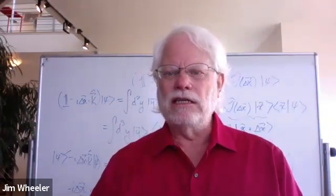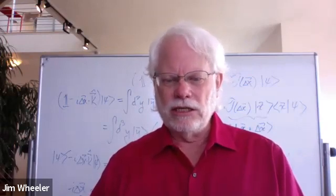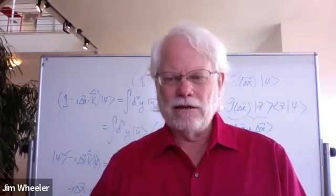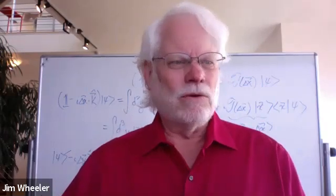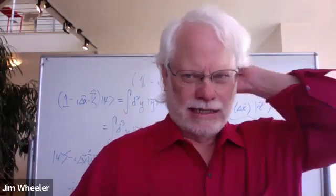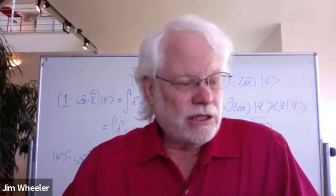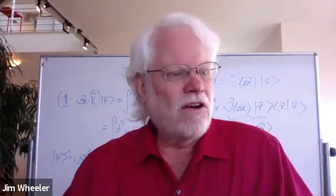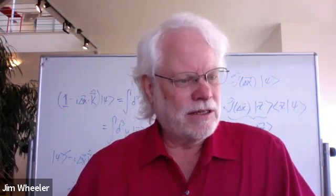Have you guys all seen E and M in relativistic notation? I've just been struggling with E and M using an unfamiliar metric — raising and lowering a spatial index introduces a sign, and flipping the Faraday tensor introduces a sign. Are there other questions before launching into the Dirac field?